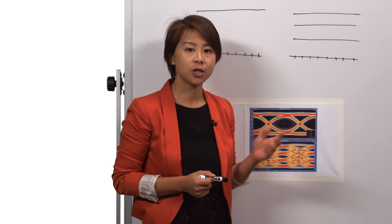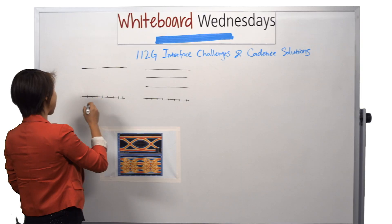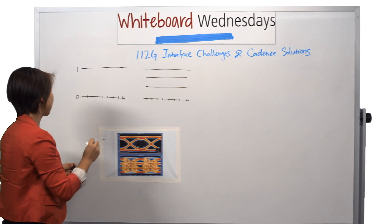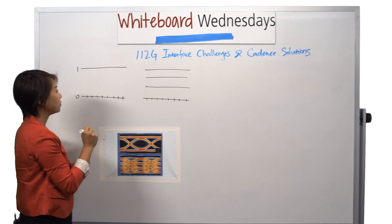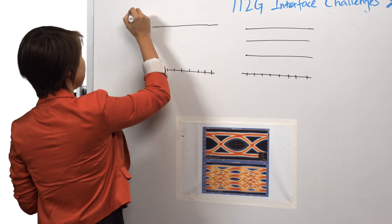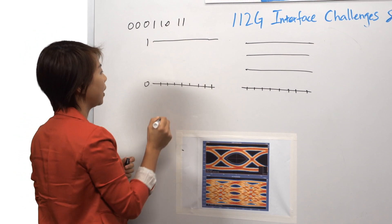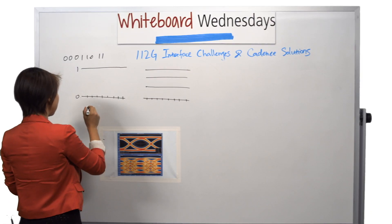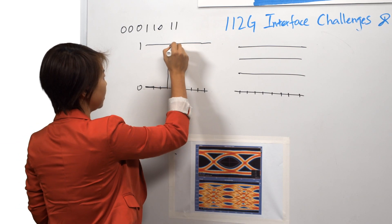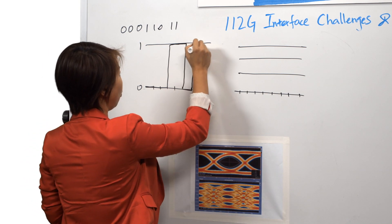So traditionally, SerDes use NRZ signaling scheme, meaning that there are two levels for signals, 0 and 1. And if you want to transmit a data stream such as 00, 01, 10, 11, the waveform will look like something like this. So 00, 01, 11, 0, 11.